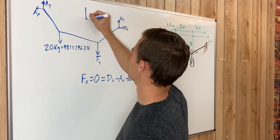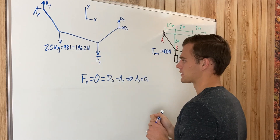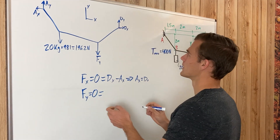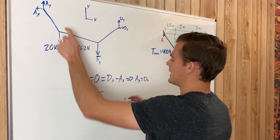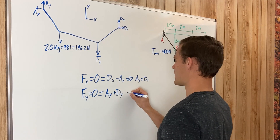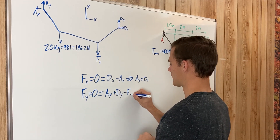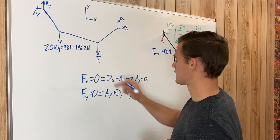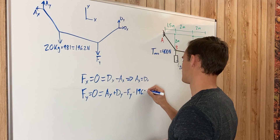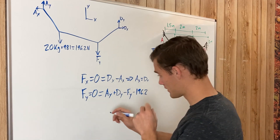We'll define our coordinate system — x direction and y direction. Summing forces in the y direction equal to zero, we have reaction forces A sub y and D sub y both pulling up in the positive y direction, then F sub y and 196.2 newtons both acting in the negative y direction.